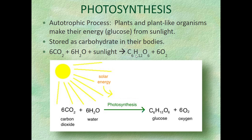Most of what's left in a plant after you remove the water is cellulose. Wood — like what houses are made of — is basically the cell walls left over after a tree is cut up into boards. Cell walls are made out of cellulose, which is made out of glucose. So basically, a house is made out of sugar.